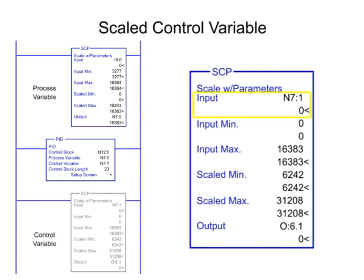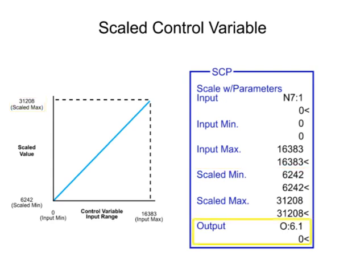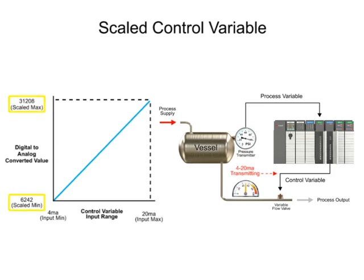The input parameter of the SCP contains the memory address of the PID output values that will be scaled. The input minimum and input maximum are programmed as the smallest and largest values of the input range. The input value is then scaled between the ranges programmed in scaled minimum and scaled maximum parameters. Scaled minimum value is programmed as 6,242, representing the low end of the analog output module range. Scaled maximum value is programmed as 31,208, representing the high end of the analog output module range. The SCP output parameter is the file address of the analog output module. The analog output module converts the digital value in the range of 6,242 to 31,208 to an analog signal of 4 to 20 milliamps.